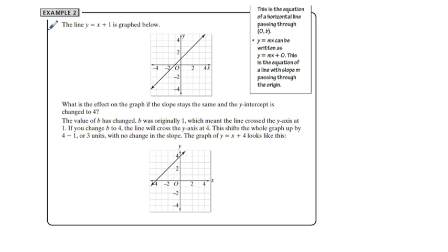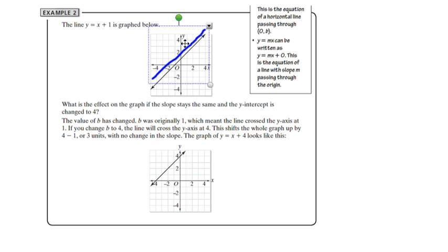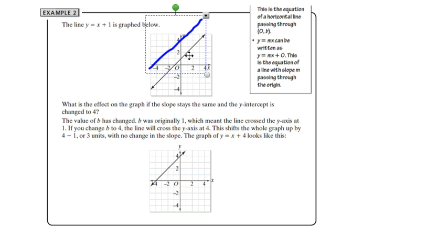Example 2: the line y equals x plus one is graphed. What is the effect on the graph if the slope stays the same and the y-intercept is changed to four? We take this same line and move it up to four — shifting up three units — which is exactly what the graph shows.